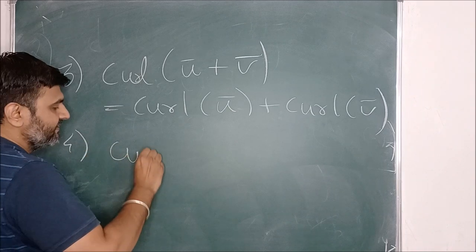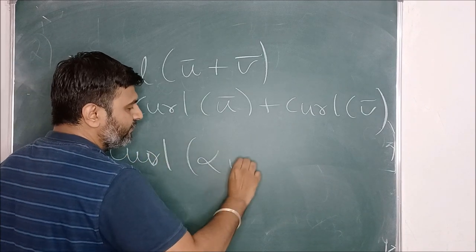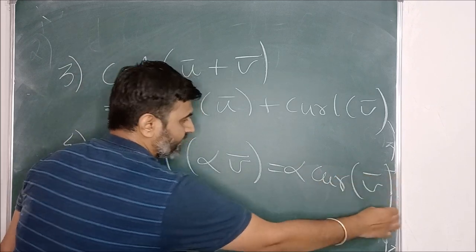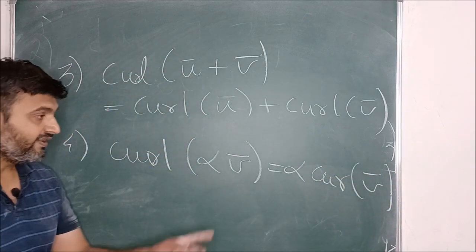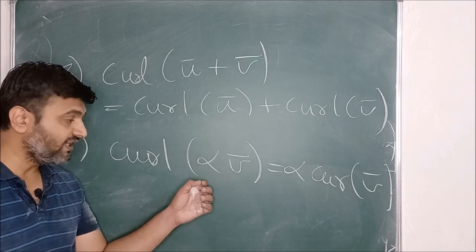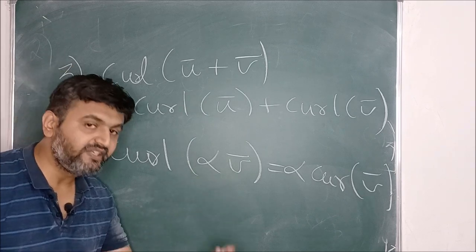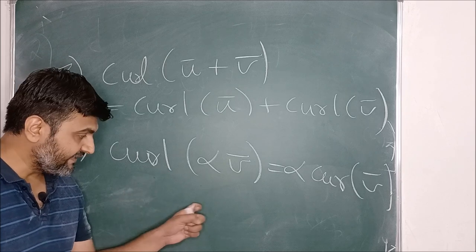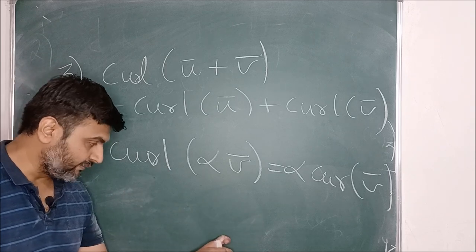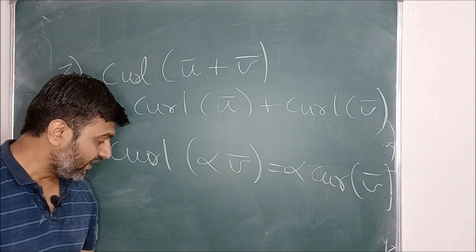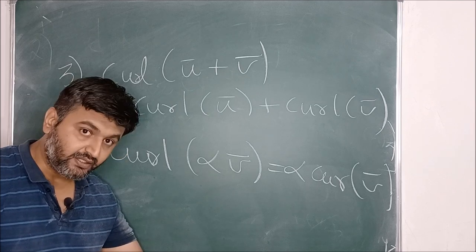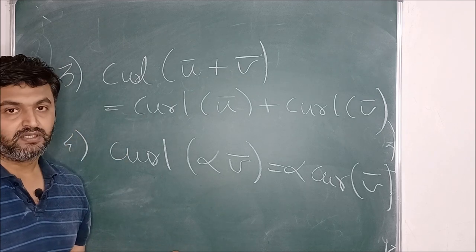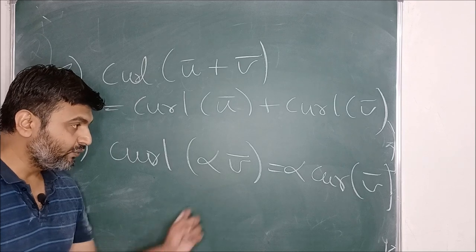The next property is: curl of α times V bar equals α times curl of V bar. If V bar is (v1, v2, v3), then αV bar is (αv1, αv2, αv3). When you find the curl using the determinant, by the property of determinants, α comes outside, so you get α times curl of V.